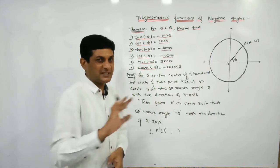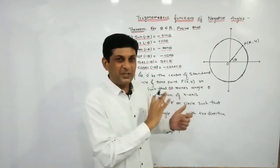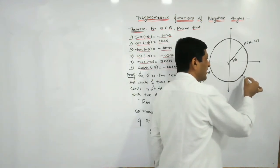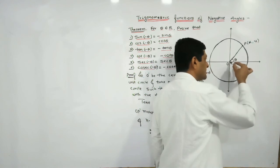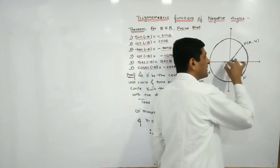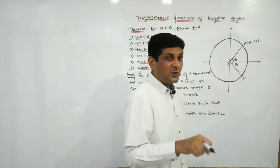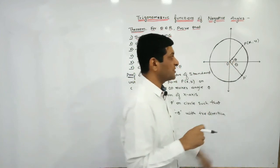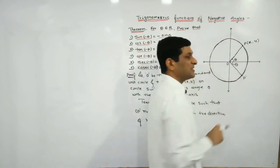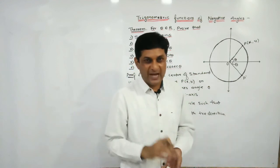Now take a second point P' on this circle such that OP' also makes angle theta with the positive direction of the x-axis, but the direction of rotation is clockwise. When the direction of rotation is clockwise, the angle is considered negative — that is, minus theta.